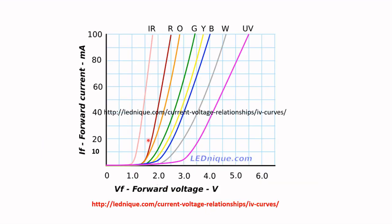This is a data chart showing forward voltage values for different color LEDs. Taking 10 milliamps as an example for the red LED, I draw a line down to where it intersects, which is approximately 1.25 volts. I'll leave the link to this website at the bottom of the video. If you're using a green LED, you can use this graph to determine the forward voltage drop.